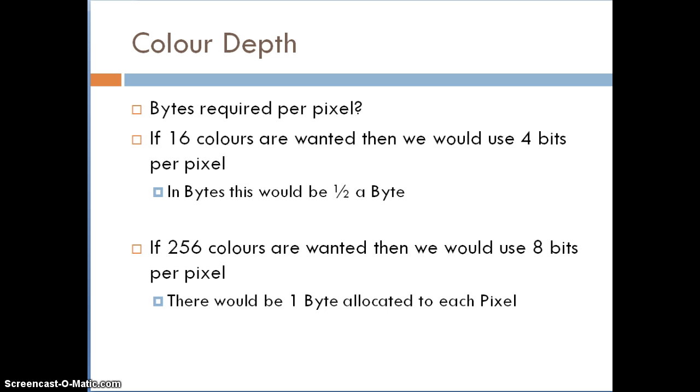We can look at the color depth in terms of the bytes required per pixel as well. So for example, if sixteen colors are wanted, then what we would need is four bits per pixel. Four bits per pixel is a nibble, and therefore it's half a byte. Two to the power of four equals 16, so therefore in terms of bytes, if we've got 16 colors, there is half a byte, or one nibble, allocated to each pixel. If you wanted 256 colors, then we would need to use eight bits per pixel. Remember, two to the power of eight equals 256. Eight bits equals one byte. So therefore, using 256 colors, you could say 256 colors means that there will be one byte allocated to each pixel.